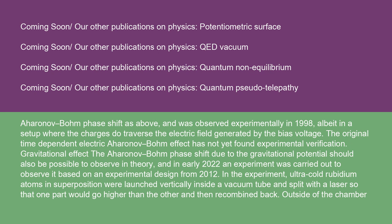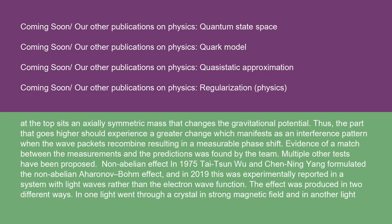Gravitational effect: The Aharonov-Bohm phase shift due to the gravitational potential should also be possible to observe in theory, and in early 2022, an experiment was carried out to observe it based on an experimental design from 2012. In the experiment, ultra-cold rubidium atoms in superposition were launched vertically inside a vacuum tube and split with a laser so that one part would go higher than the other, and then recombine back outside of the chamber. At the top sits an axially symmetric mass that changes the gravitational potential. Thus, the part that goes higher should experience a greater change which manifests as an interference pattern when the wave packets recombine, resulting in a measurable phase shift. Evidence of a match between the measurements and the predictions was found by the team. Multiple other tests have been proposed.